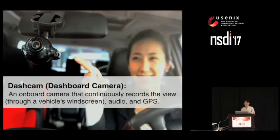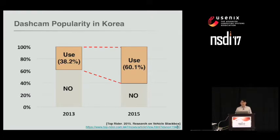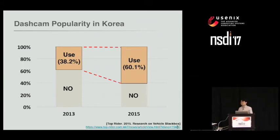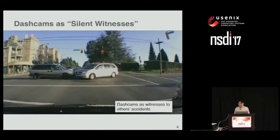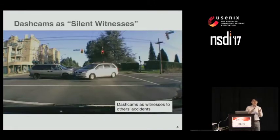A dashcam is an onboard camera that continuously records the view around the vehicle. Dashcams have been very popular in many parts of Asia. For example, in South Korea, the adoption rate has already exceeded 60%. The main reason people install dashcams is for their own safety. However, dashcams have a side benefit — tremendous potential to act as a silent witness to others' accidents.